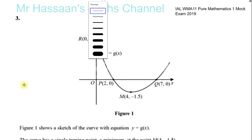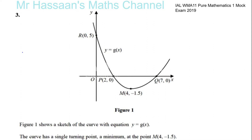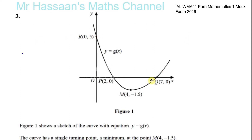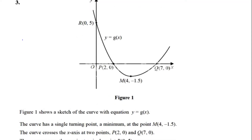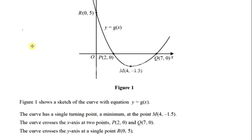It's about transformations of graphs. Figure 1 shows a sketch of a curve with the equation Y equals G of X. We don't have any other information about this curve — we don't know its actual equation. It looks like some sort of quadratic type of curve, but we can't be sure. The curve has a single turning point, a minimum, at point M, (4, -1.5). The curve crosses the X-axis at two points: P(2, 0) and Q(7, 0). The curve also crosses the Y-axis at a single point R(0, 5).